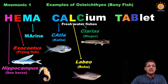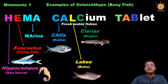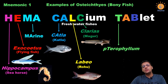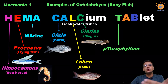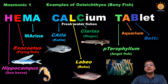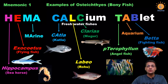The word 'Calcium' helps you remember freshwater fishes: Catla, Labeo, and Clarias. Next is 'Tablets,' which helps remember fishes used in aquariums. T stands for Pterophyllum — it starts with P but the P is silent, so we pronounce it 'Pterophyllum' — that is the angelfish. A reminds us these are aquarium fishes. Beta, or the fighting fish, is the next aquarium example. So Beta and Pterophyllum are two fishes used in aquariums.